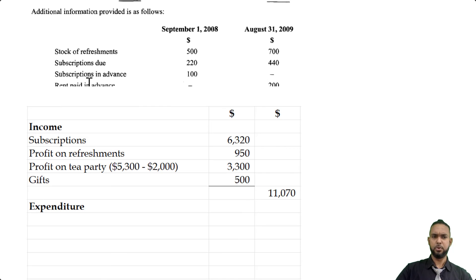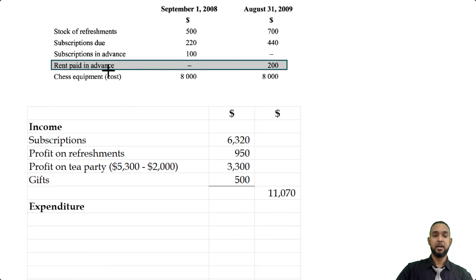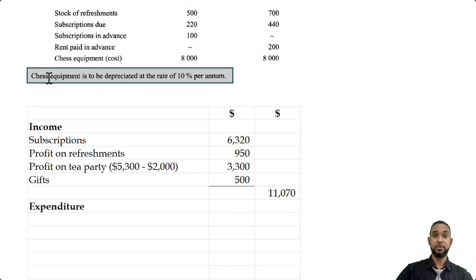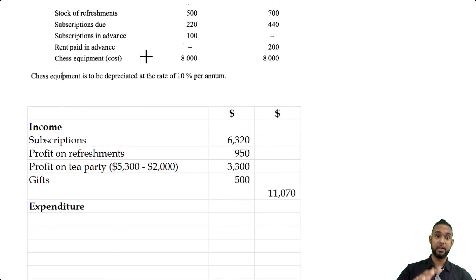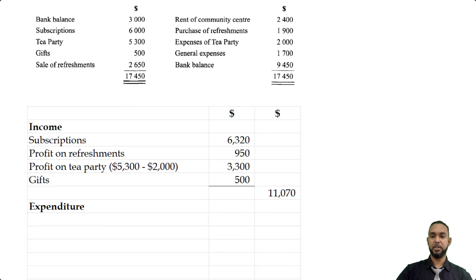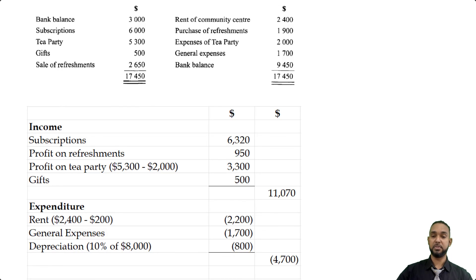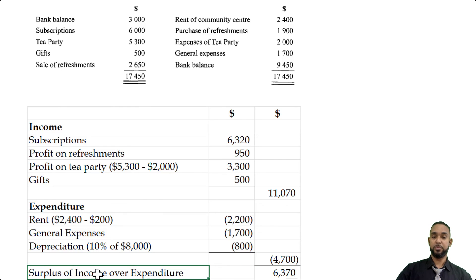For rent of community center, always check your additional information — there's a prepaid balance of $200, so we subtract that from the $2,400 paid to get the amount incurred. General expenses were simply $1,700. For depreciation of chess equipment: 10% of $8,000 is $800. Adding all expenditure together gives $4,700, which when subtracted from total income of $11,070 gives a surplus of income over expenditure of $6,370. If they had made a loss it would be called an excess of expenditure over income.